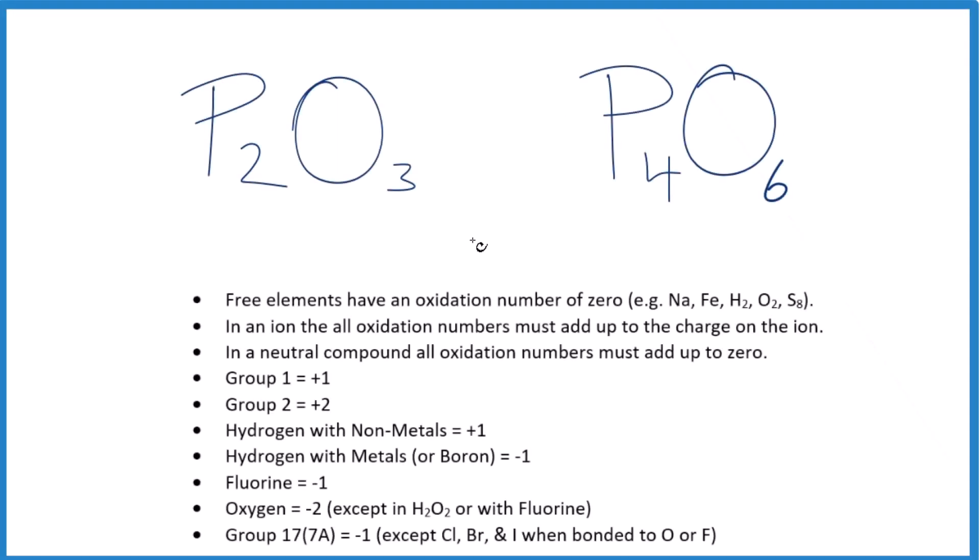In this video, we'll find the oxidation numbers for each element in P2O3 and then in P4O6. And the thing is, P2O3 doesn't really exist in this form. It's always found as P4O6. But let's find the oxidation numbers for each element for these just anyway.